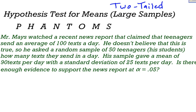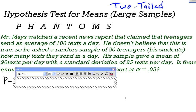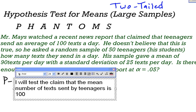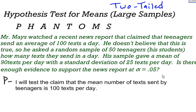I'm going to jump right into P. P stands for parameter statement, and that's where I state my claim. I'm going to state at the very beginning what I am testing, and then at the very end I'm going to make a decision about that claim. I will test the claim that the mean number of texts sent by teenagers is 100 texts per day. There's a key little word in this claim — the key word is going to lead me to H, the null and alternative hypotheses.